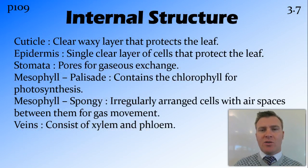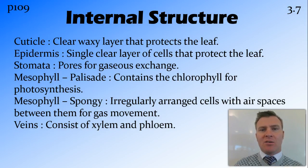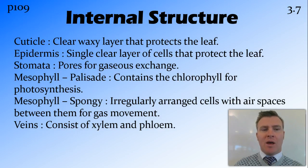We're now going to look at the internal structure of the leaf. We have the cuticle, which is a clear waxy layer on the outside that protects the leaf, generally found on the upper side of the leaf. The epidermis is a single layer of cells that also protects the leaf. It's also clear and is found both on the top and the bottom of the leaf, giving us the upper epidermis and lower epidermis.